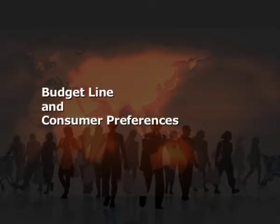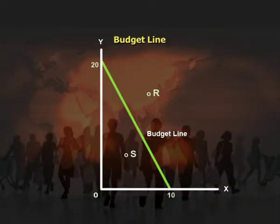Our next topic is budget line and consumer preferences. A budget line, or more technically a budget constraint, is an important component when analyzing consumer behavior; it is also known as the price line. A budget line illustrates all possible combinations of two goods that the consumer can buy at given prices and available budget. The amount of a good a consumer can buy depends on income and the price of the good. The slope of a budget line is negative as it slopes downwards, measured by dividing the price of the good on the horizontal axis by the price on the vertical axis — that is, Px divided by Py.